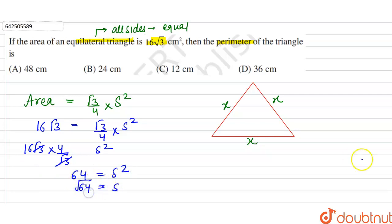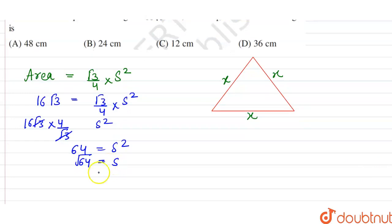Side will be equal to √64. Now √64 is 8, so side will be equal to ±8 centimeters. As side cannot be negative, we take the side as 8 centimeters. So the side of the equilateral triangle is 8 centimeters.